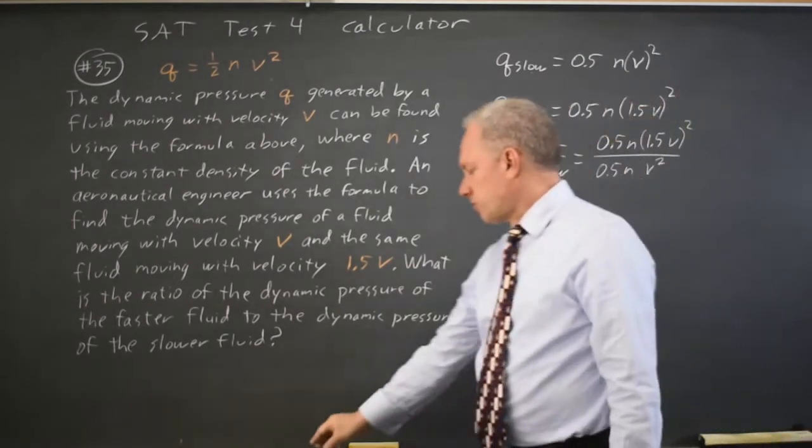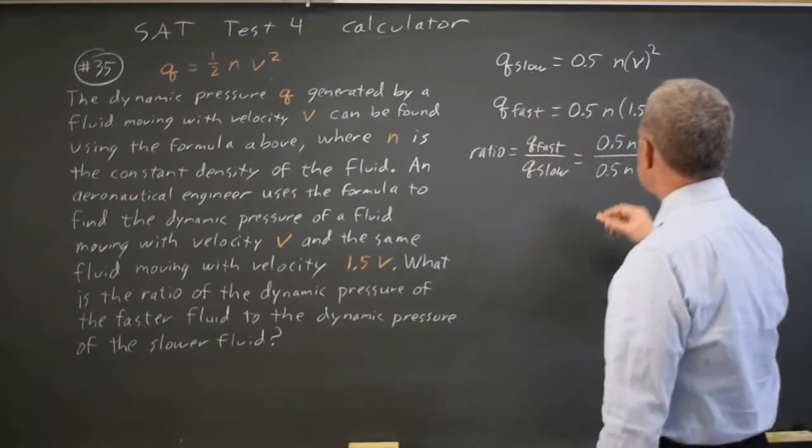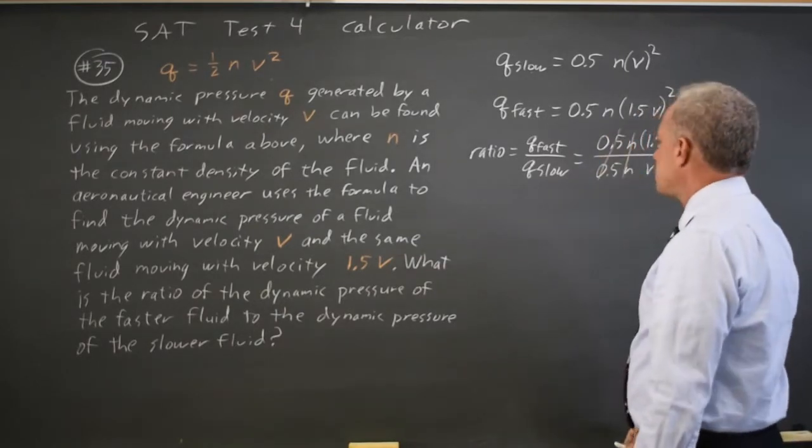0.5N over 0.5N is 1, or as we usually say, they cancel.